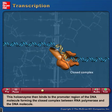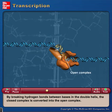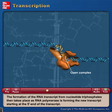This forms the closed complex between RNA polymerase and the DNA molecule. By breaking hydrogen bonds between bases in the double helix, the closed complex is converted into the open complex.